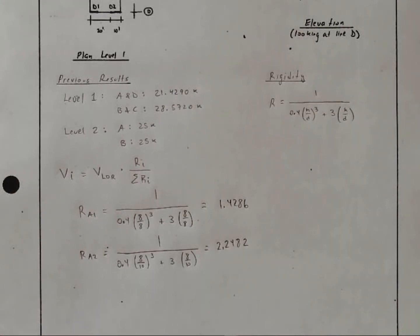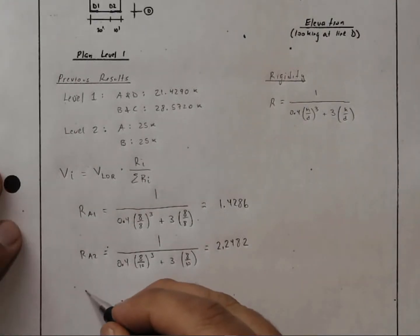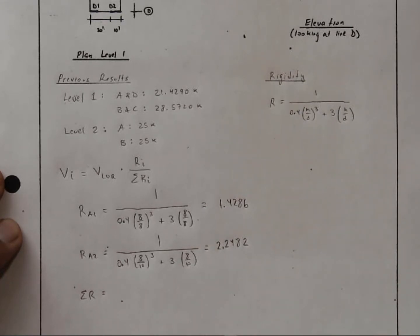So we'll notice that adding just 2 extra feet of length really has a significant influence on the rigidity of these elements. A longer shear wall is going to be much more effective than 2 shorter shear walls that add up to the same length. We can calculate the sum of the r's because we'll need this so that we can plug into this equation here.